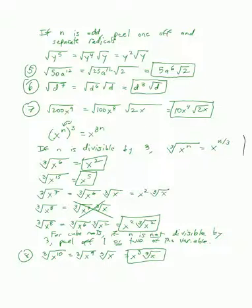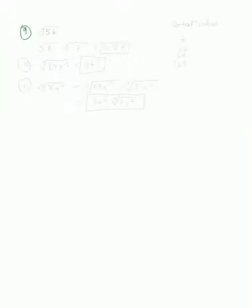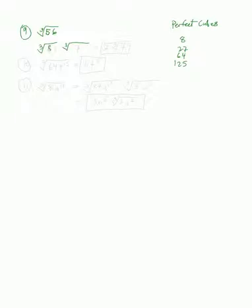What about when dealing with numbers? To simplify the cube root of 56, make a list of perfect cubes: 2 cubed is 8, 3 cubed is 27, 4 cubed is 64, 5 cubed is 125. Same approach: find the largest perfect cube that goes in. For 56, that's 8, with 7 left over since 7 times 8 is 56. The cube root of 8 is 2, so we end up with 2 times the cube root of 7.